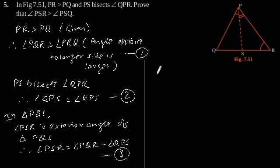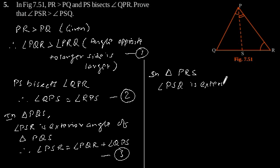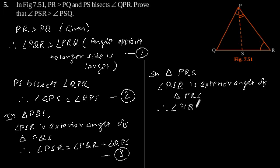Similarly, considering triangle PRS: angle PSQ is the exterior angle of triangle PRS. Therefore, angle PSQ is equal to angle PRQ plus angle RPS. Let's call this equation four.